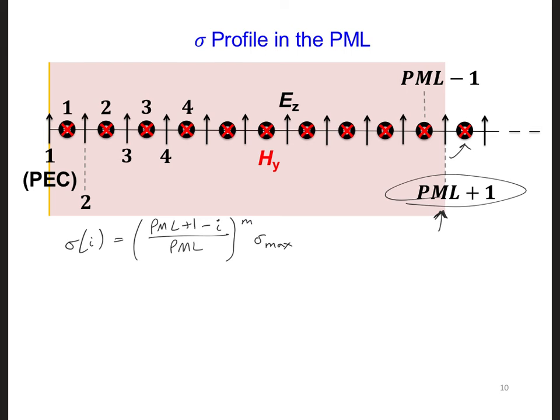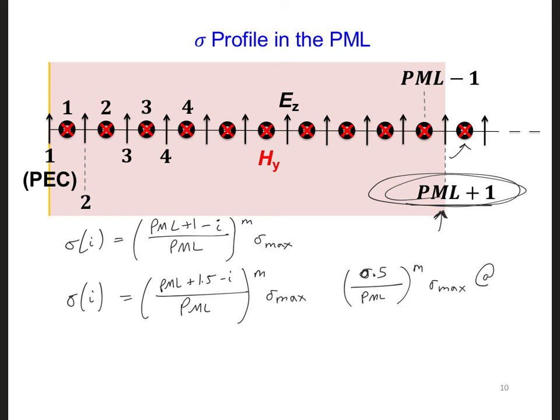To accomplish this, we need to have 1.5 in the numerator instead of 1. So if I do that, now we have 1.5 in the numerator. So now when i is equal to PML plus 1, the numerator will be equal to 0.5. So we'll have 0.5 over PML to the power m sigma max at i equal PML plus 1.